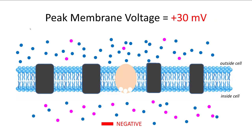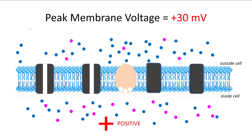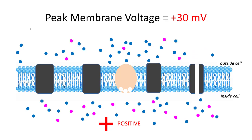When sodium channels open, sodium enters, creating a more positive environment until it reaches plus 30. This then causes the neighboring sodium voltage-gated channel to open. Once the first channel reaches plus 30, it closes while the second one opens, causing the next to open as well. We can see how it leapfrogs down an axon: as one channel opens and reaches its positive peak, it closes the preceding channel and triggers the next one.